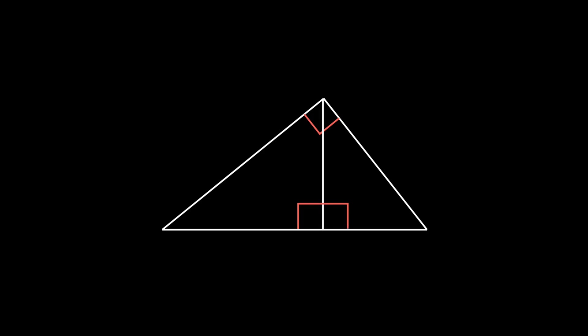This dissects the triangle into three similar right triangles. Next, label the sides A, B, and C, and U and V on the two smaller right triangles accordingly. This means A squared equals UC, and B squared equals VC.